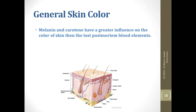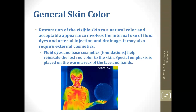Melanin and carotene have much greater influence on skin color than the lost post-mortem blood elements. That's why an individual of African descent is going to stay dark-skinned after death — if it were a blood fluid component, they would go to a much lighter color as the blood decomposes. Restoration of visible skin to a natural color involves multiple items: internal use of fluid dyes, drainage, and external agents such as cosmetics.